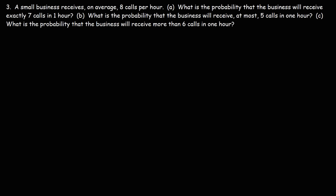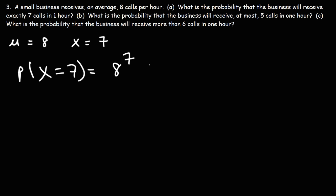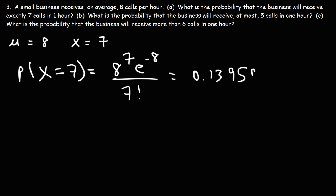Number 3: a small business receives, on average, 8 calls per hour. What is the probability that the business will receive exactly 7 calls in 1 hour? The mean is clearly 8 and x is 7. So P(x=7) equals mu to the x — that's 8 to the 7th power — times e raised to the negative 8, divided by 7 factorial. Plugging this in gives 0.1395865, or approximately 13.96%. That's the answer for part A.